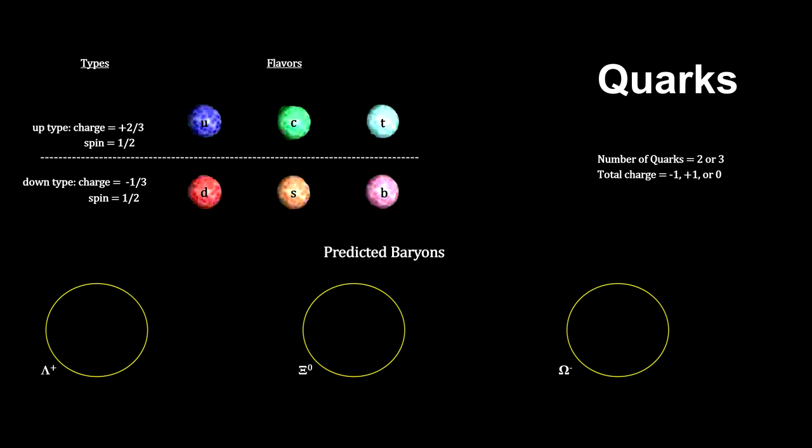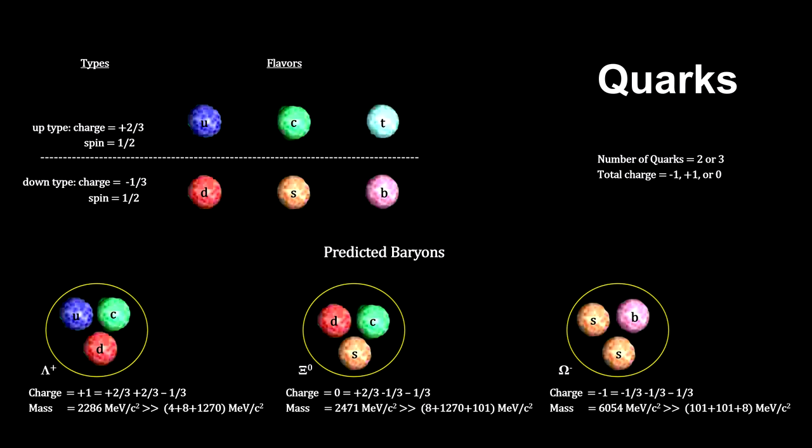So armed with quarks, physicists intensified their search for some of the three quark particles predicted by Gilman and Zwick's theory, the lambda, psi, and omega baryons.